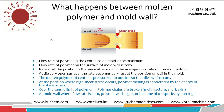What happens between molten polymer and the mold wall? It is very necessary to know why die drool happens. The flow rate of polymer in the center inside the mold is maximum. The gray part is the mold, and the yellow part is the molten polymer. In the center of the molten polymer the speed is maximum, and on the wall the molten polymer speed is zero. After the mold, the extrudate goes at the same speed outside of the mold.